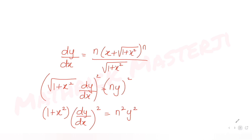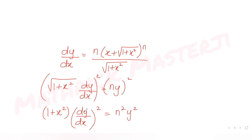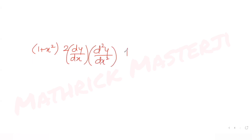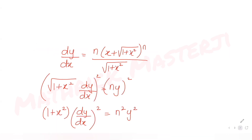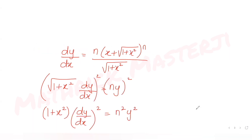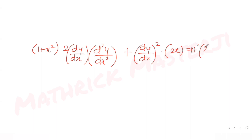Now let's take the derivative again of the entire expression (1 + x²)(dy/dx)² = n²y². For the left side, using the product rule: (1 + x²) times the derivative of (dy/dx)² gives 2(dy/dx)(d²y/dx²), plus (dy/dx)² times the derivative of (1 + x²), which is 2x. On the right side, derivative of n²y² gives 2n²y·(dy/dx).